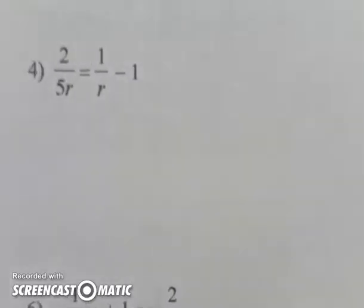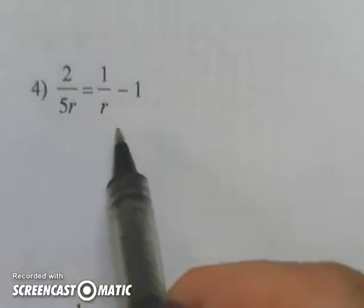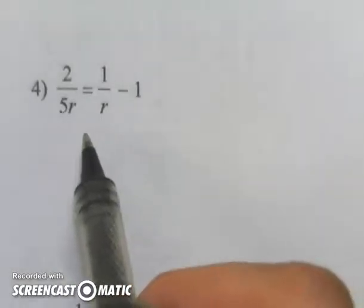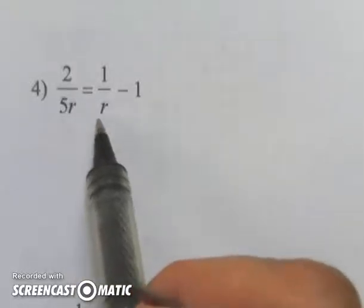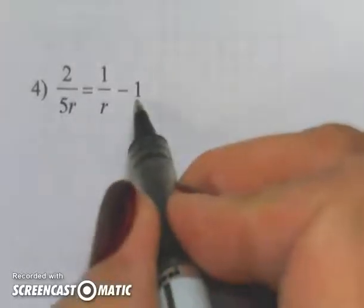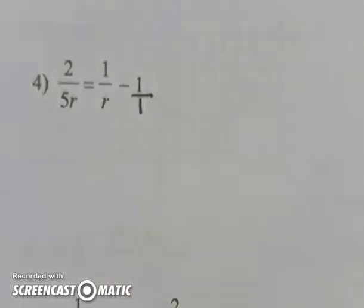You'll notice that I have two denominators showing, 5r and an r. So I see that they both have an r, but this one needs a 5. The other thing I notice is this 1 does not have a denominator.